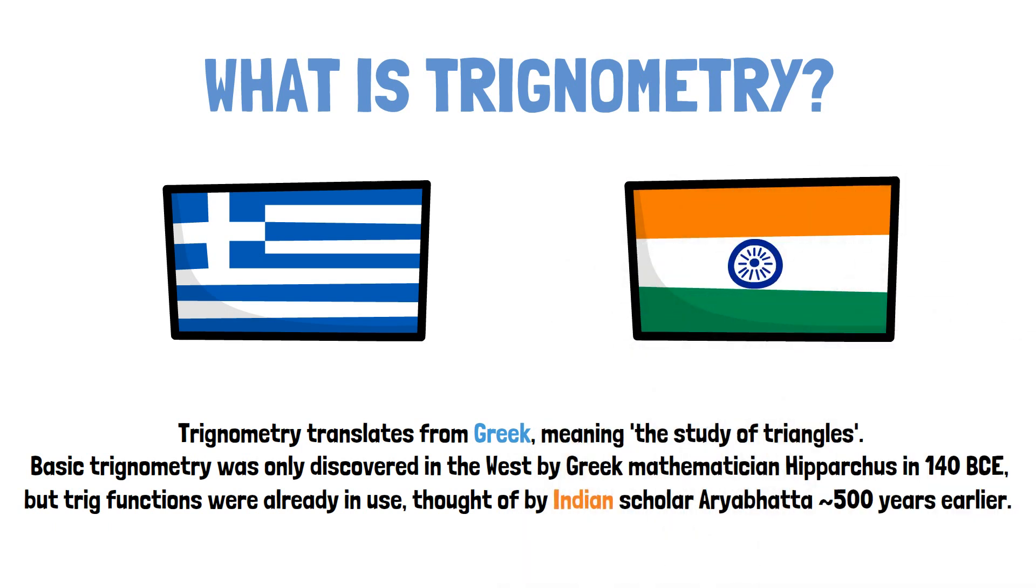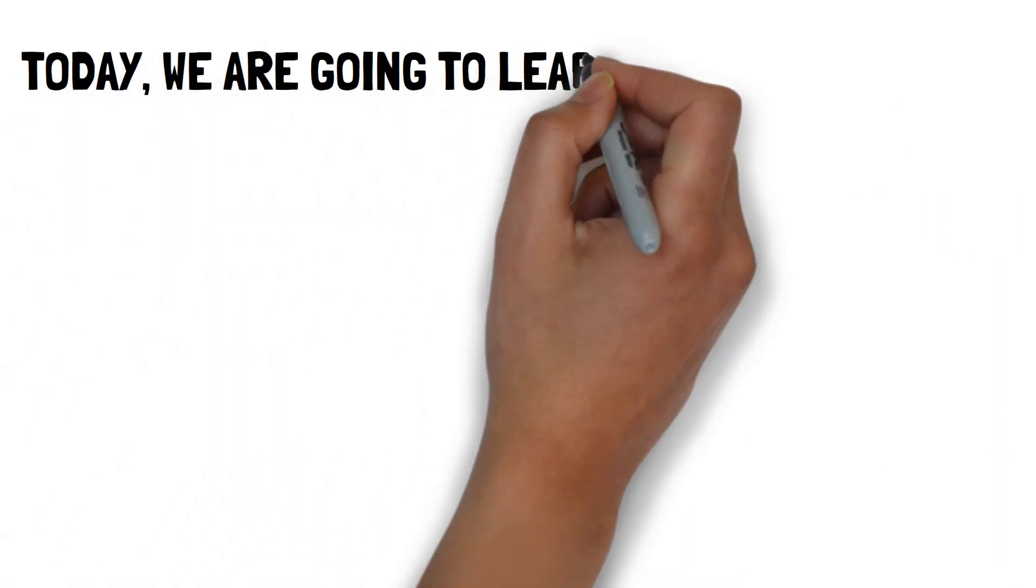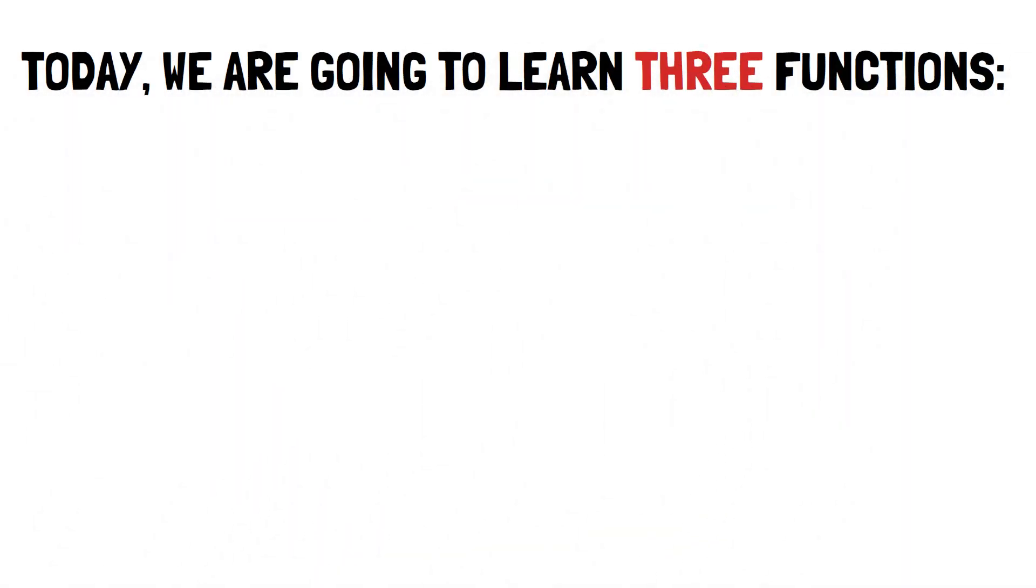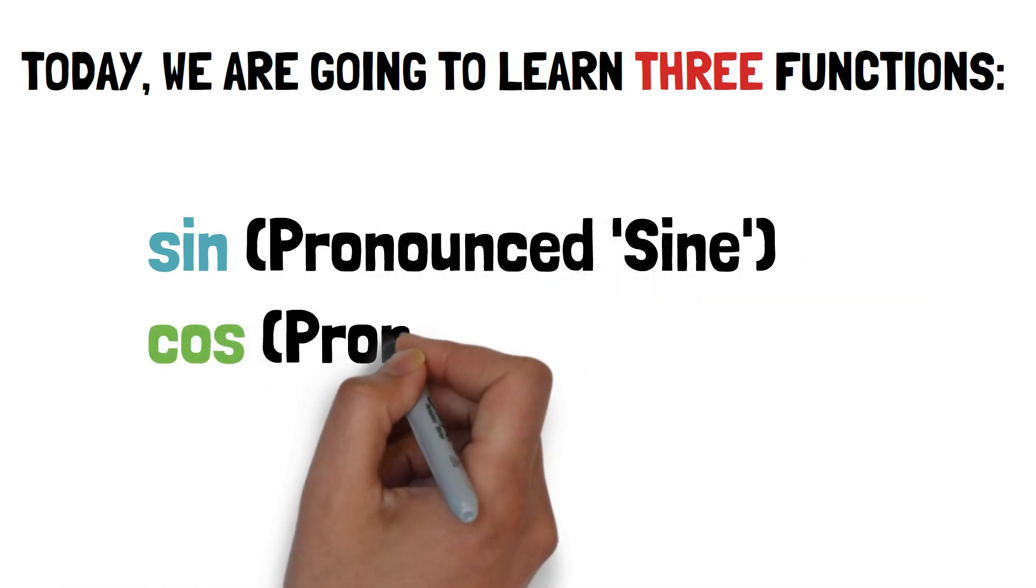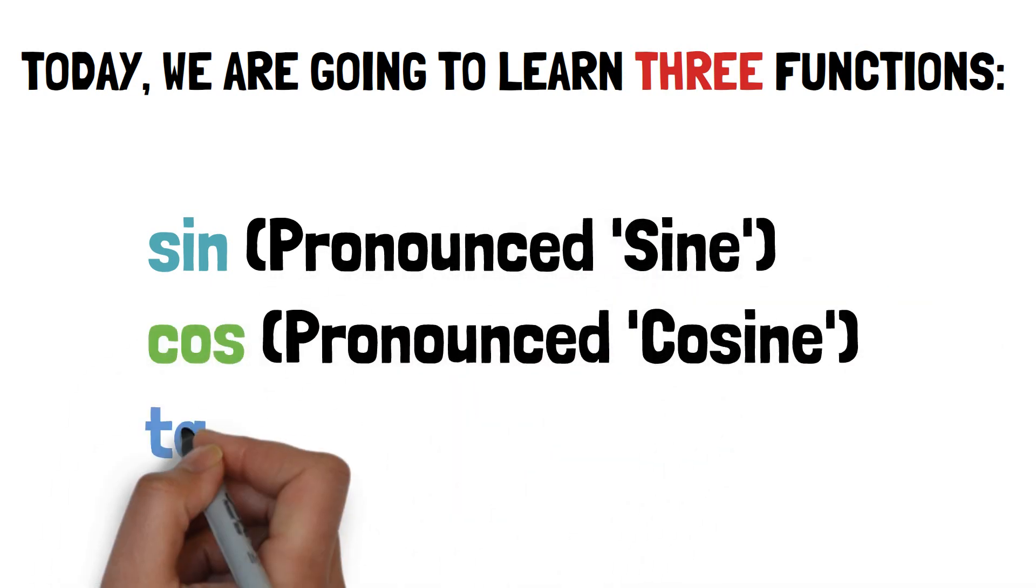Today we're going to learn three trigonometric functions: sin (pronounced 'sine'), cos (pronounced 'cosine'), and tan (pronounced 'tangent').